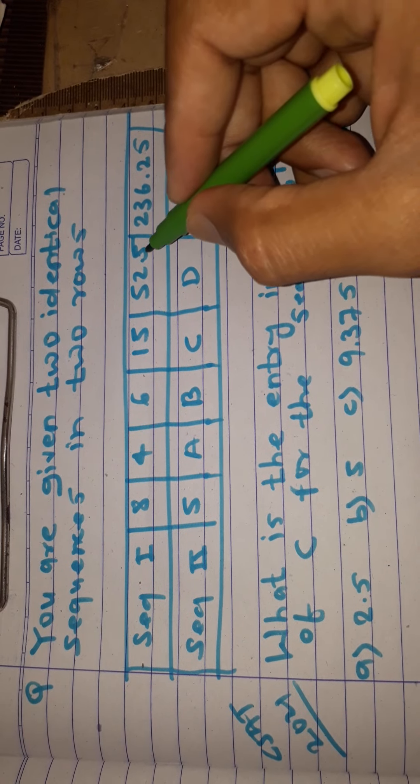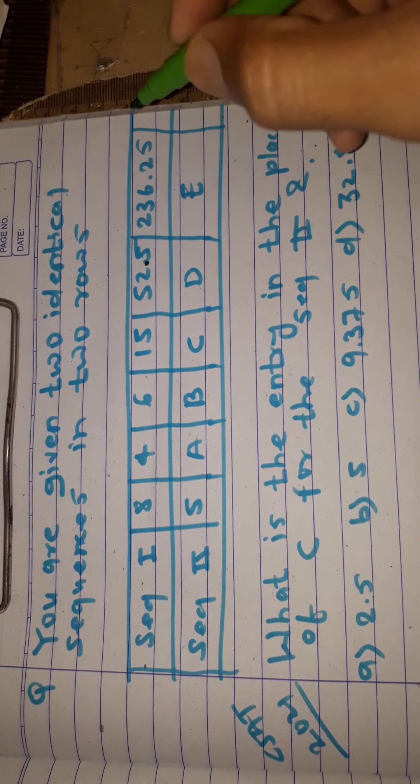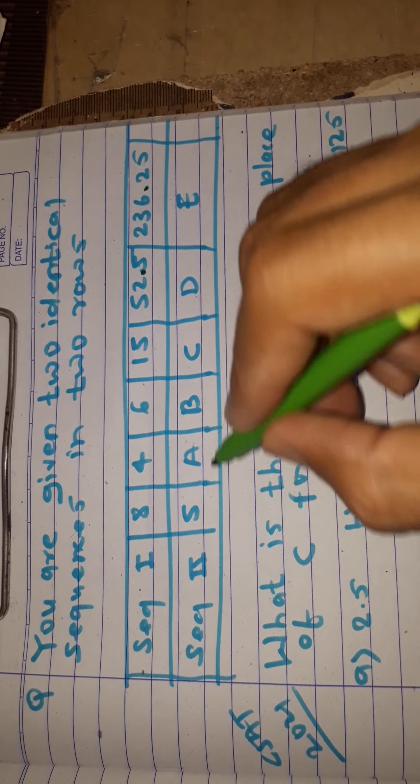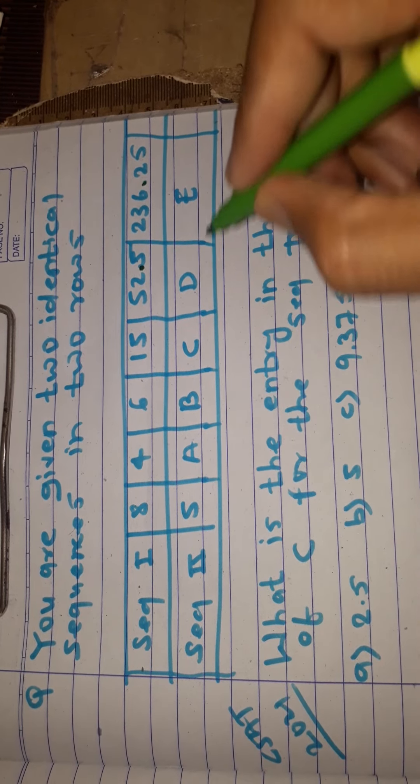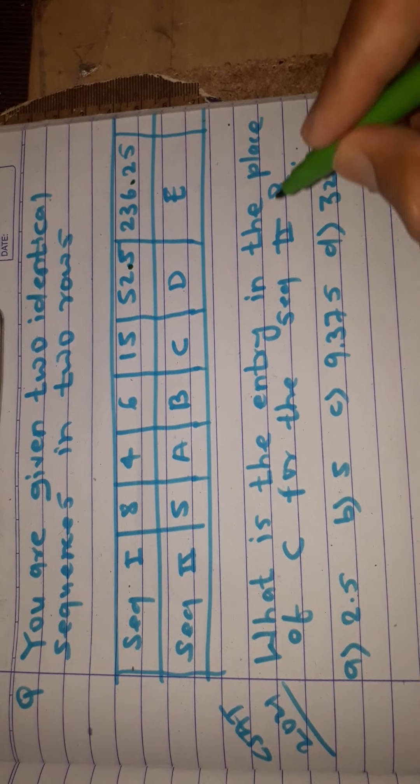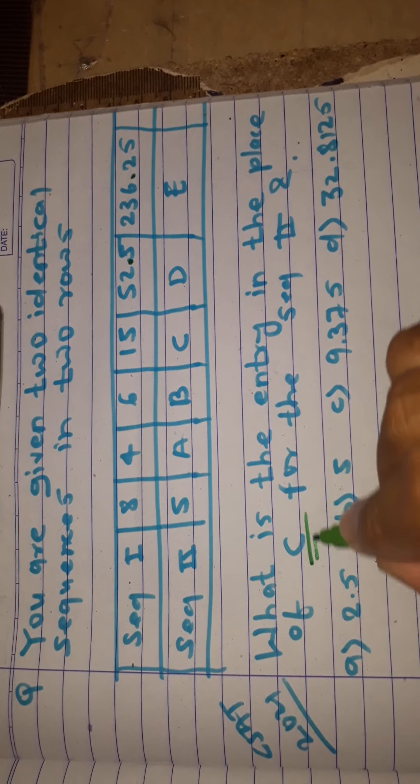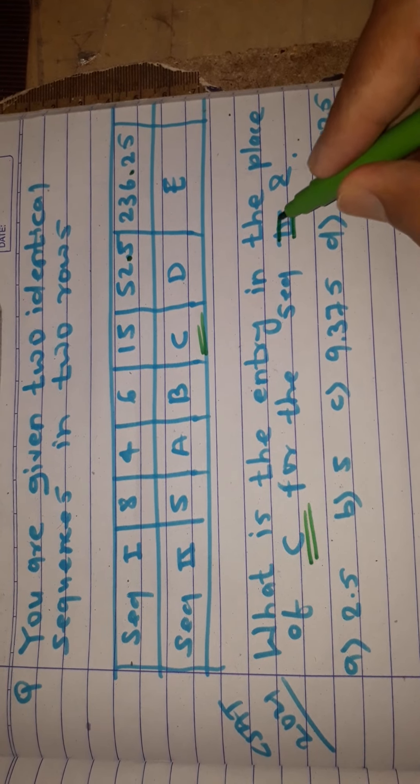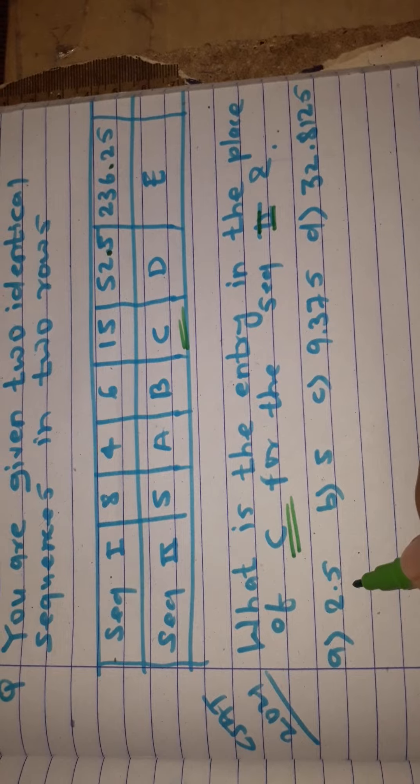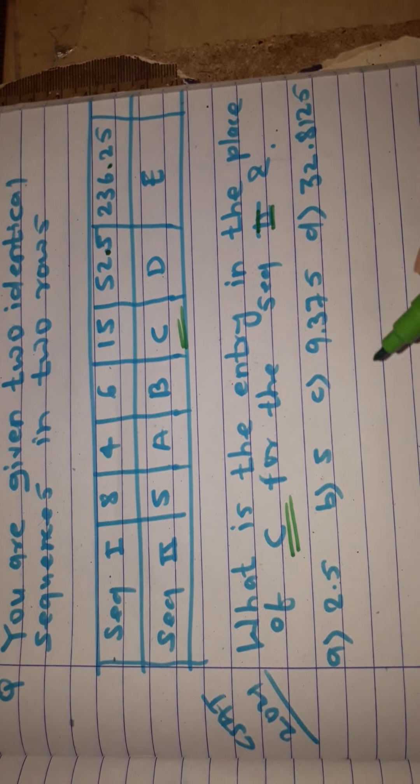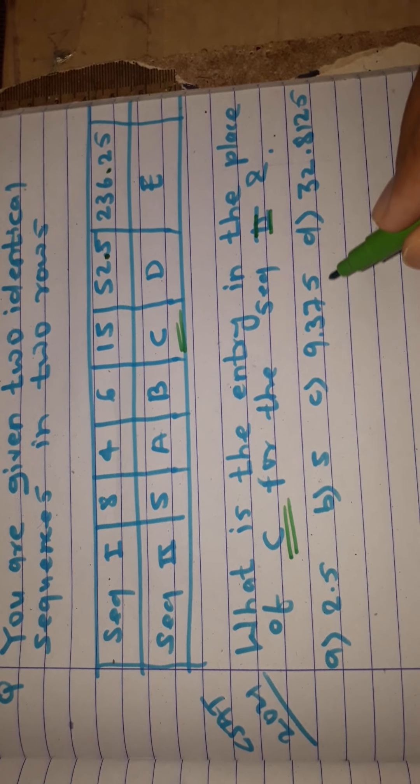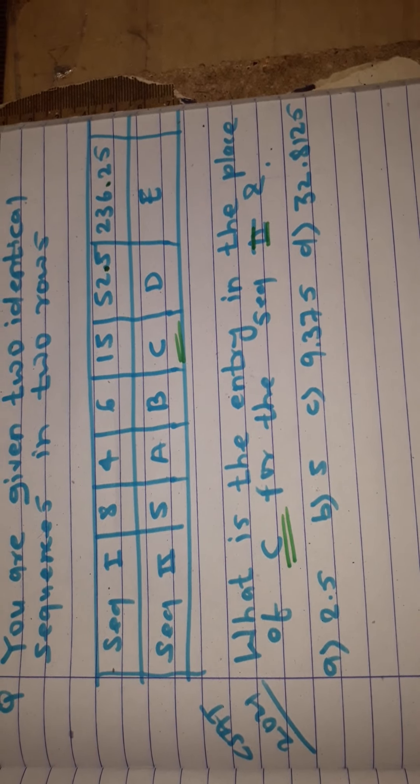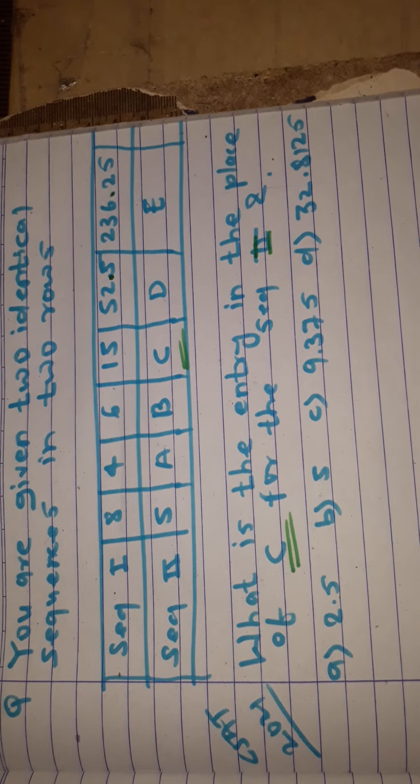Sequence 2 is 5, a, b, c, d, e. What is the entry in the place of c? The options given are: first option is 2.5, second option is 5, third option is 9.375, fourth option is 32.8125.